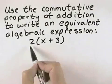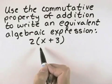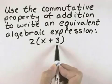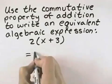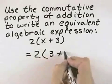If we don't read carefully, we might multiply the 2 through, but that uses the distributive property. What we want to do instead is use the commutative property of addition. And since this is the addition, we have x plus 3, so the commutative property would leave the 2 alone and instead reverse it to 3 plus x.